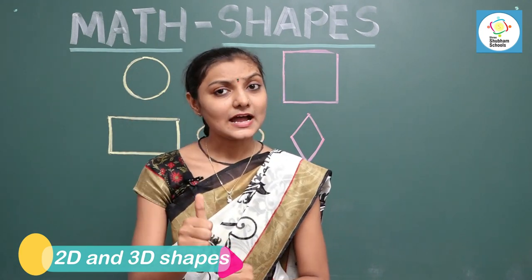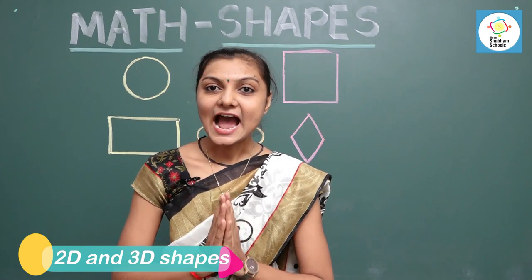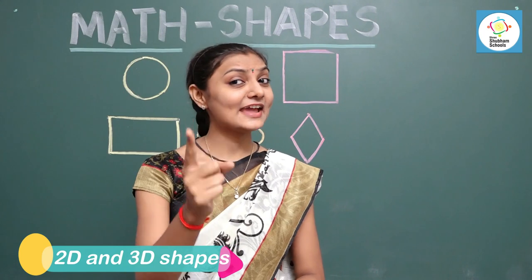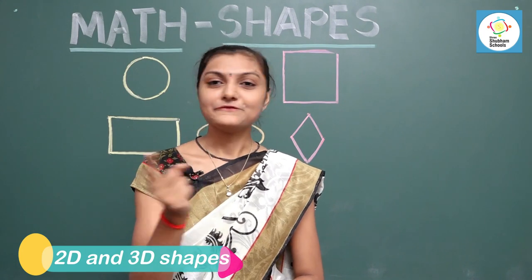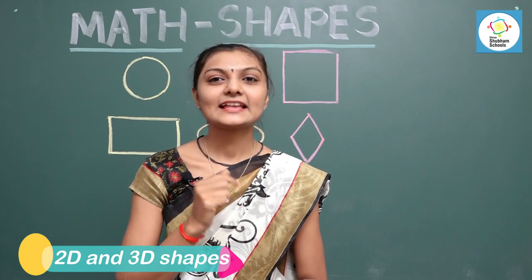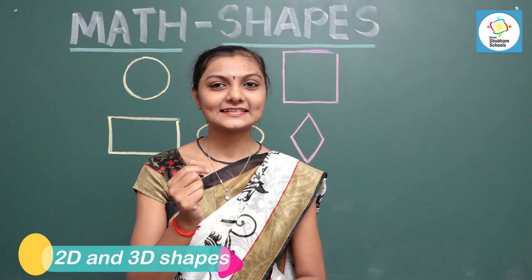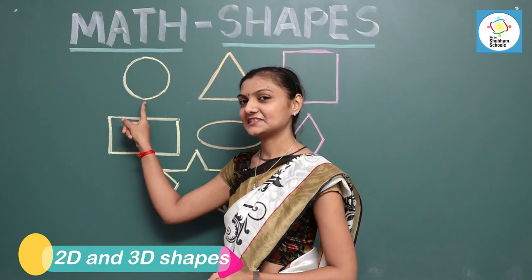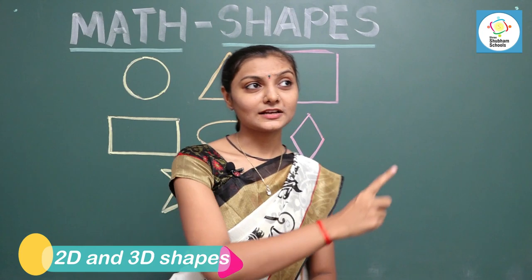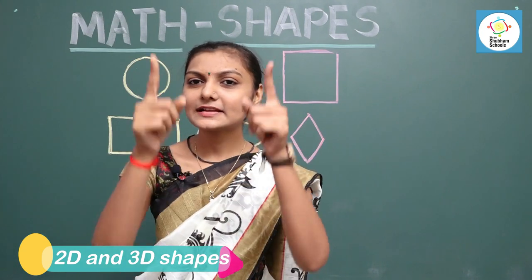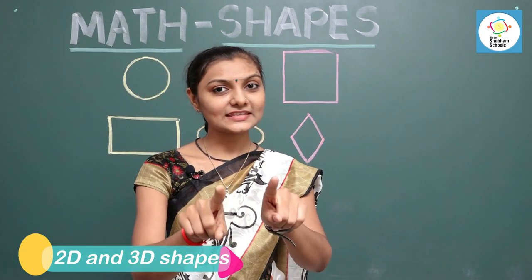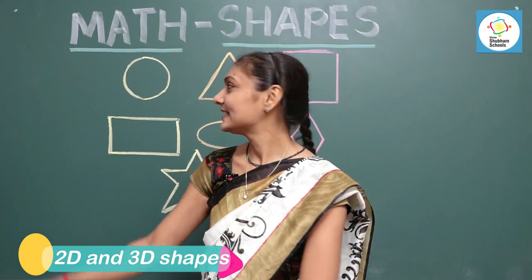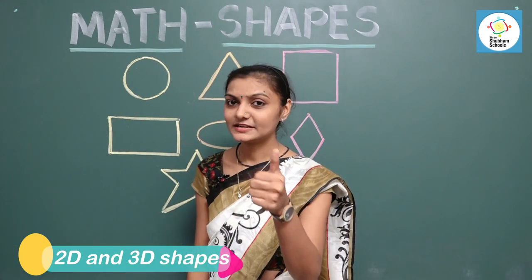Suppose I ask you: I have no sides and no corners — which shape am I? Give the correct answer. Yes, this is a circle! Now take a look around you and make a list of those things which you see in the shape of a circle. Understood?